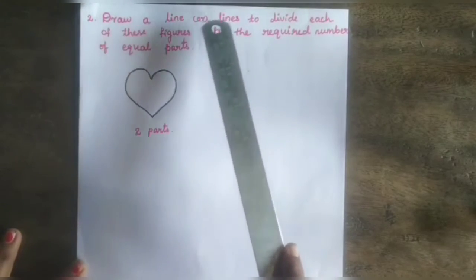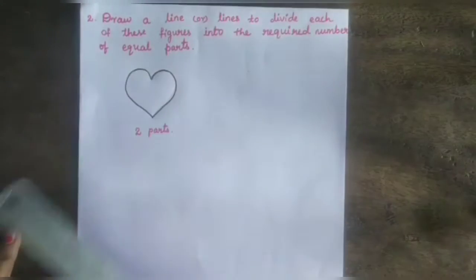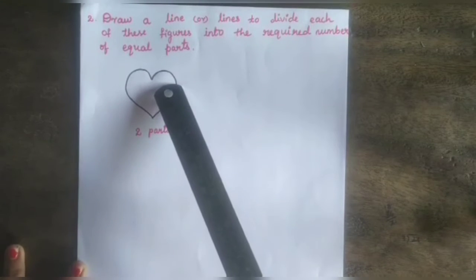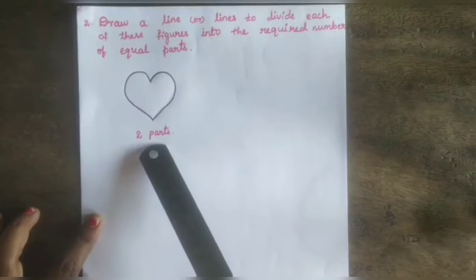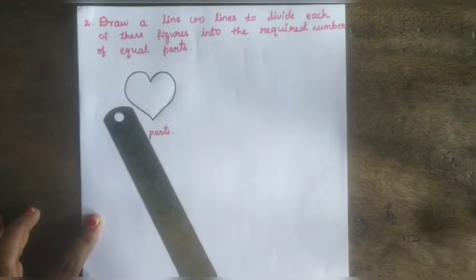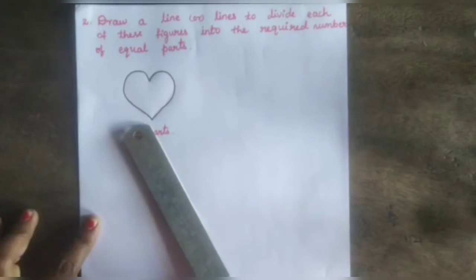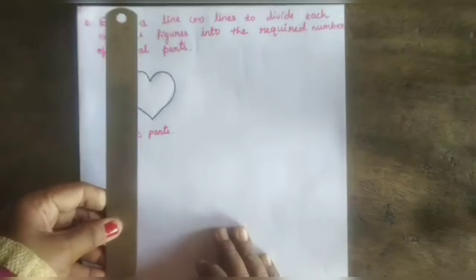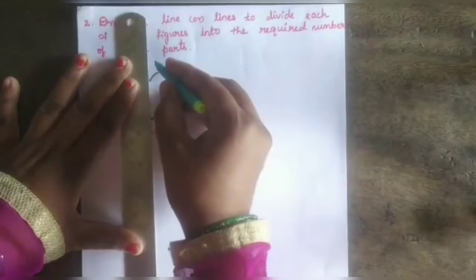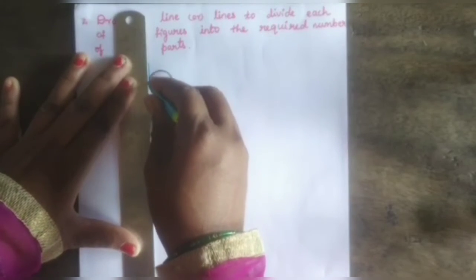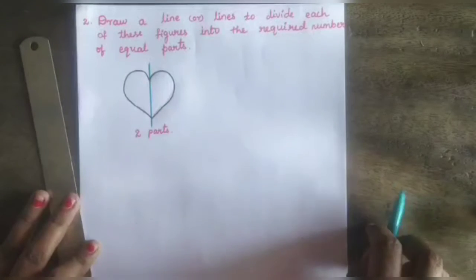Second question: draw a line or lines to divide each of these figures into the required number of equal parts. For this figure we have to draw a line to make it into two equal parts. So we draw a horizontal line for this picture, making it two equal parts.